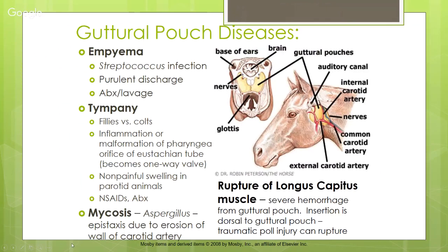Guttural pouches exist uniquely in horses. They function like a sinus with a two-way valve — air goes in and out. We think this may help with their ability to run long distances, similar to the air sacs in birds, and it also helps make their head lighter.